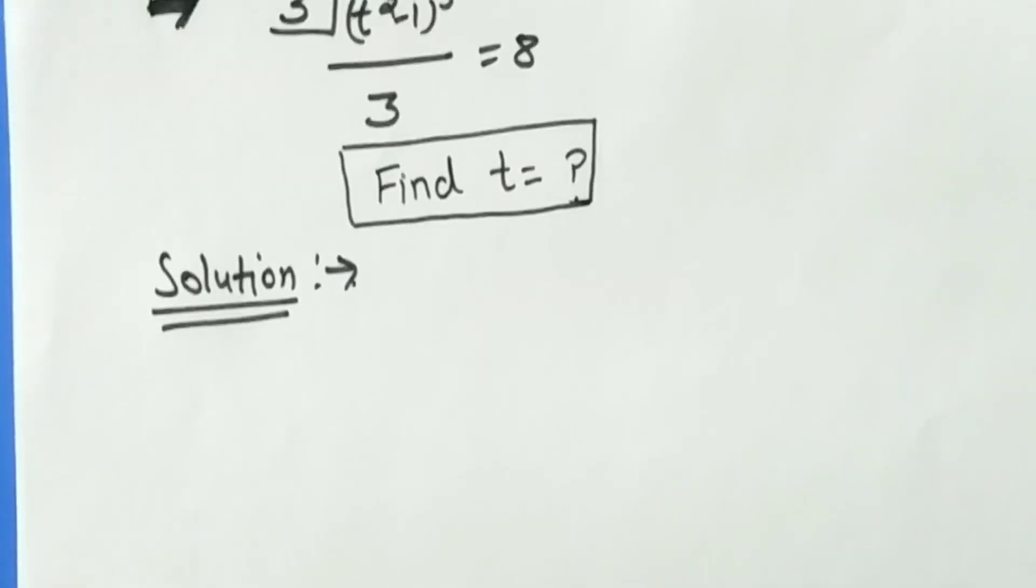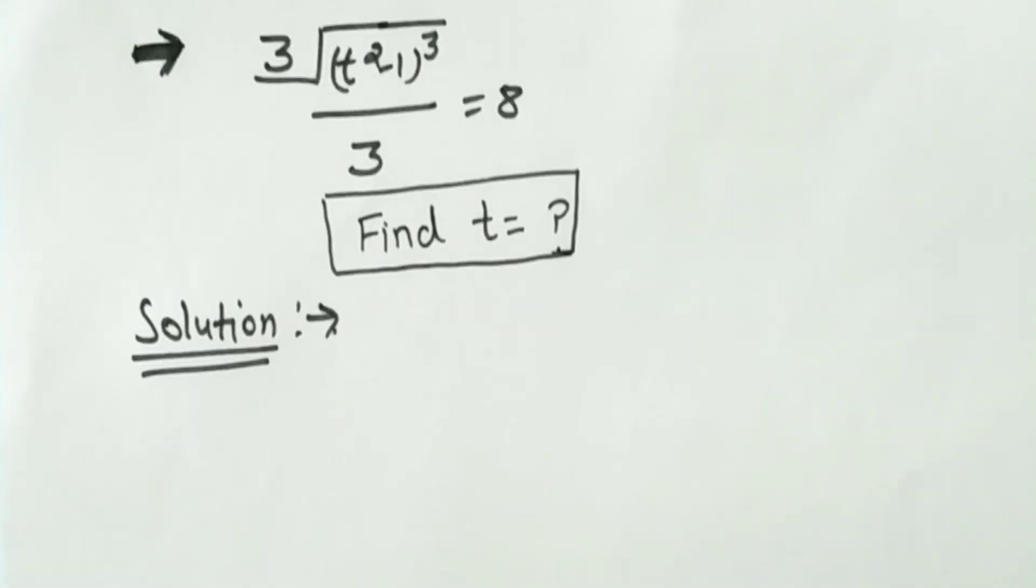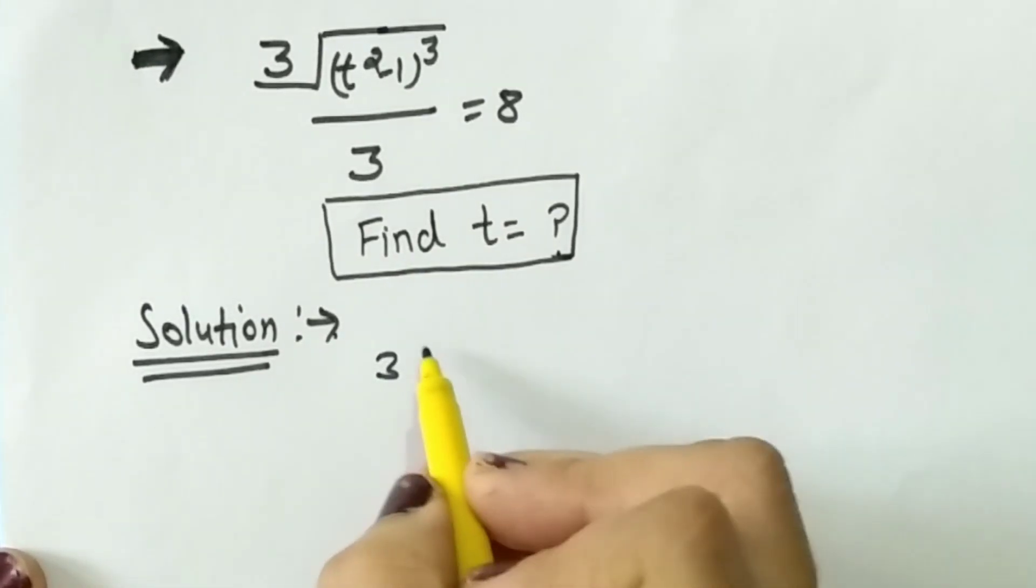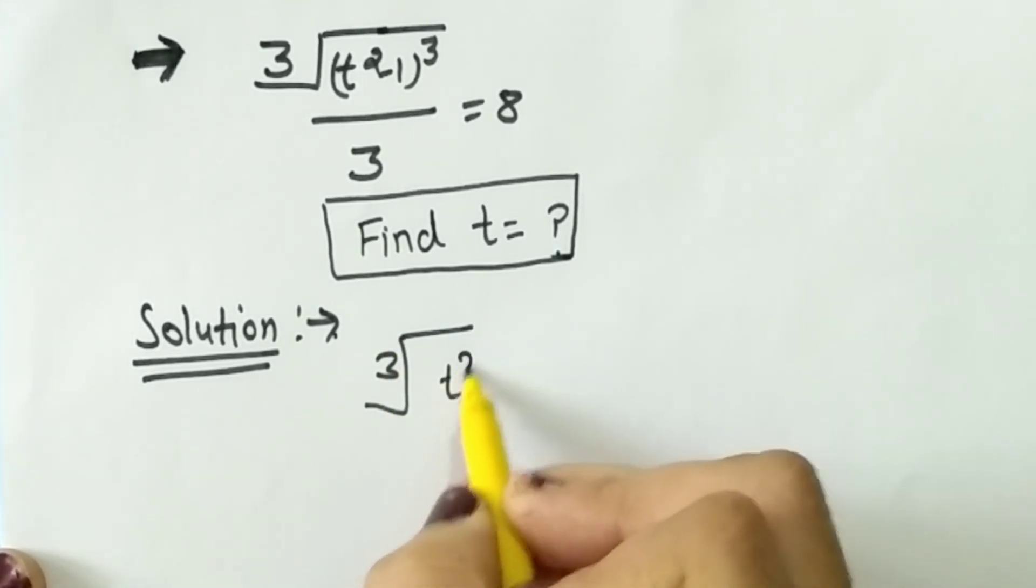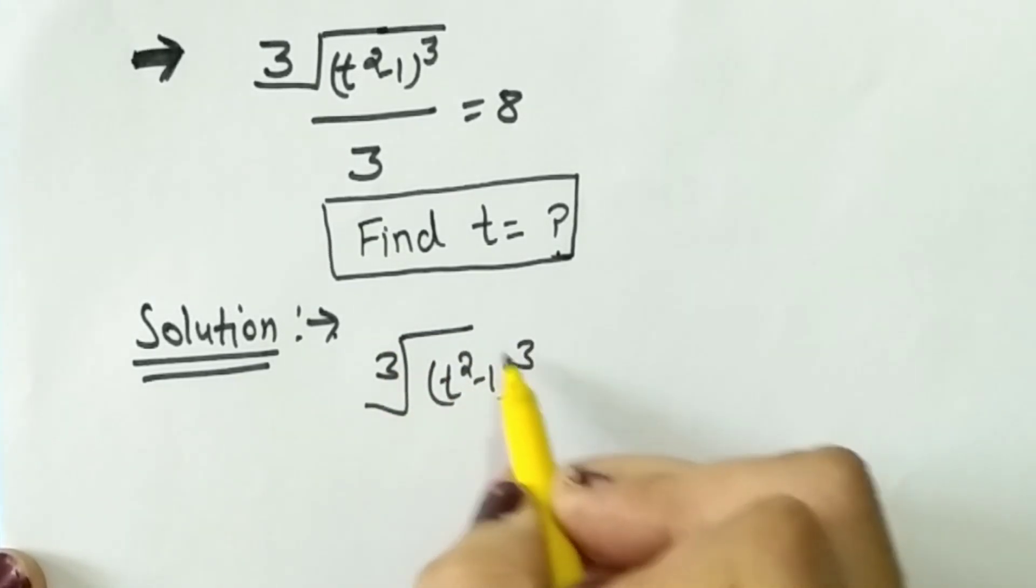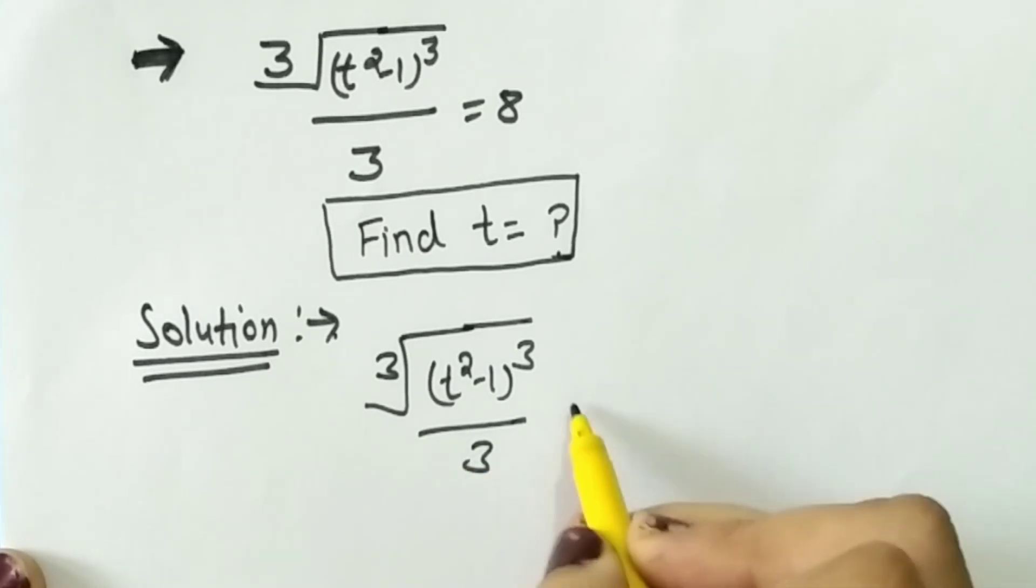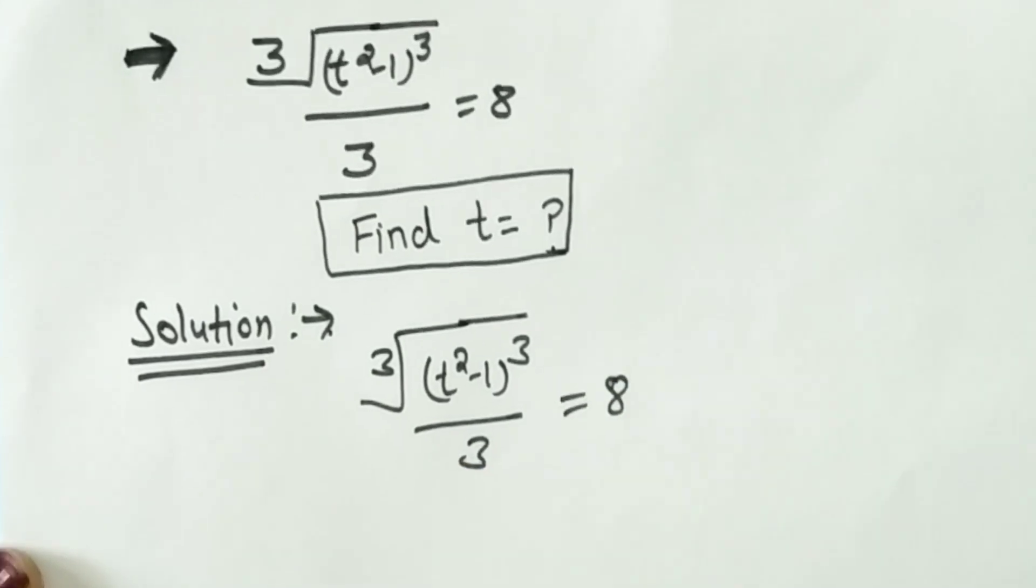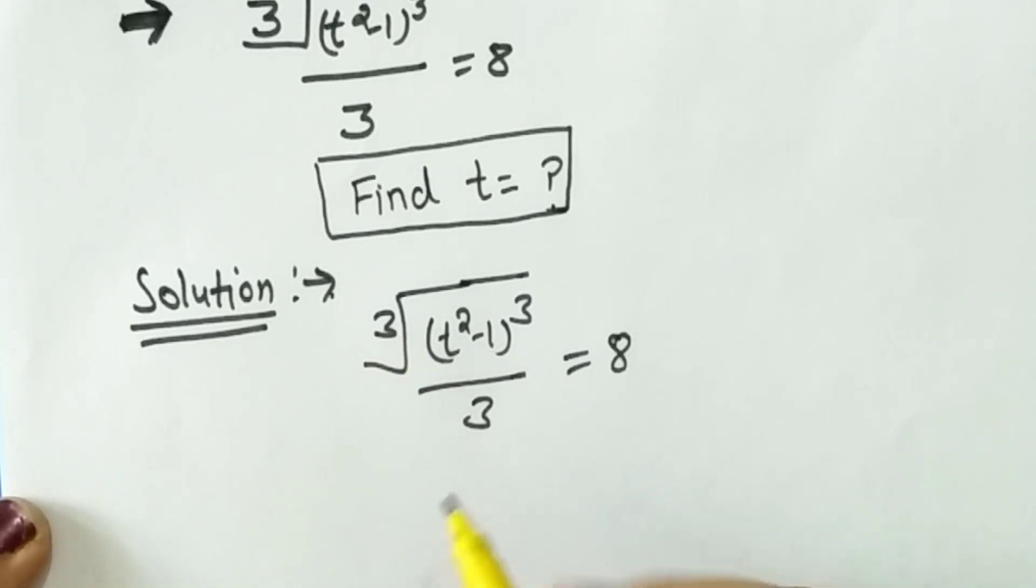So let's start. First of all, we write as it is: cube root of (t² - 1) raised to power 3 over 3 equals 8. Now, index 3 can be written as (t² - 1) raised to power 3 and raised to power 1/3 over 3 equals 8.